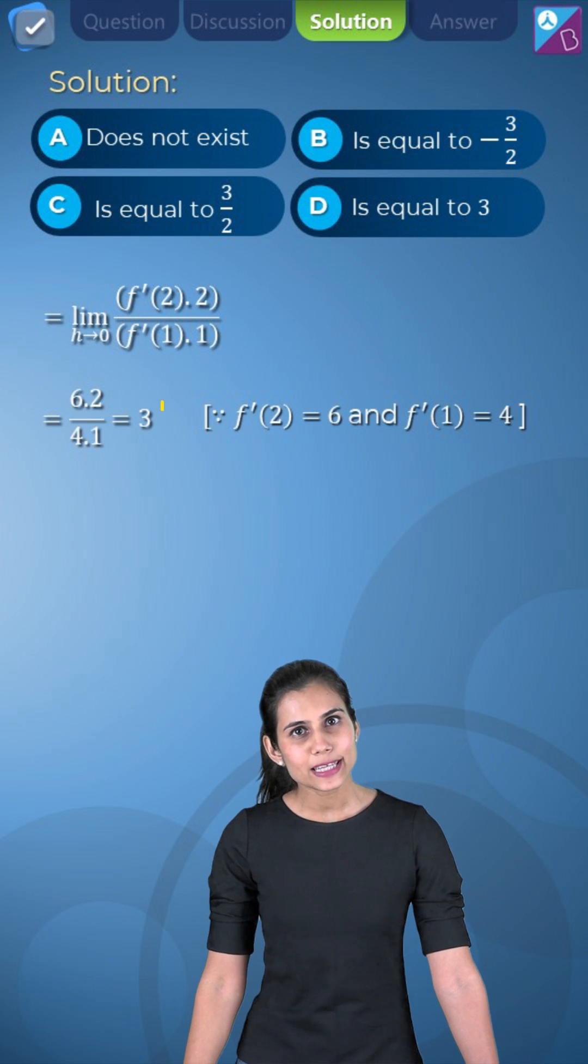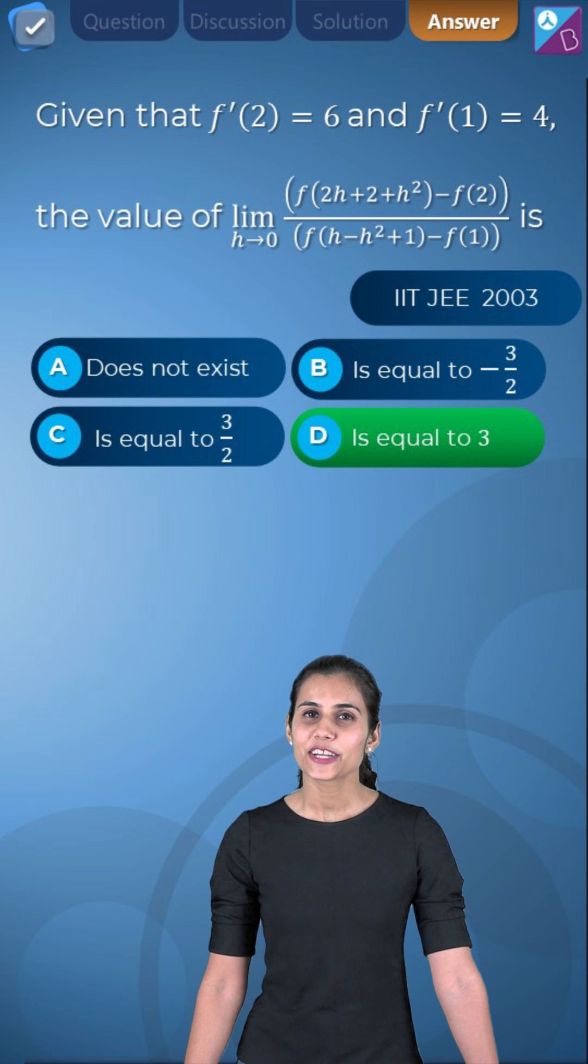In the end, we will just substitute f'(2) as 6 and f'(1) as 4, and what you will end up getting is 3 halves to be the final answer, sitting in option D.